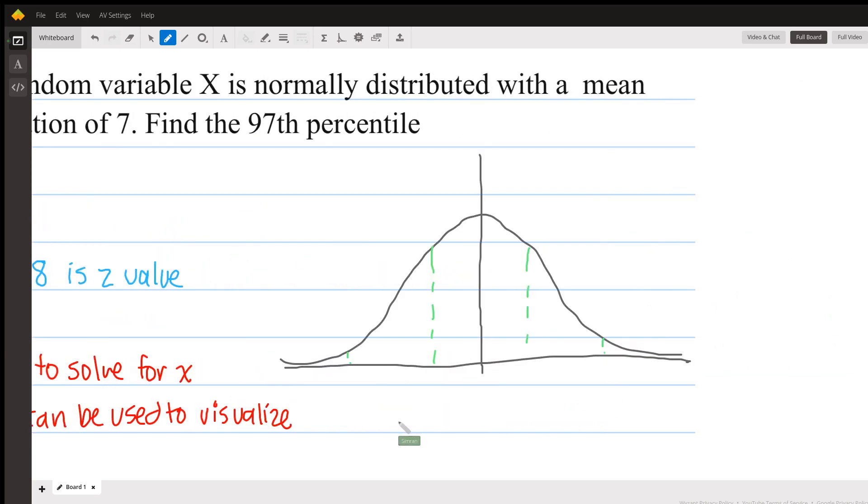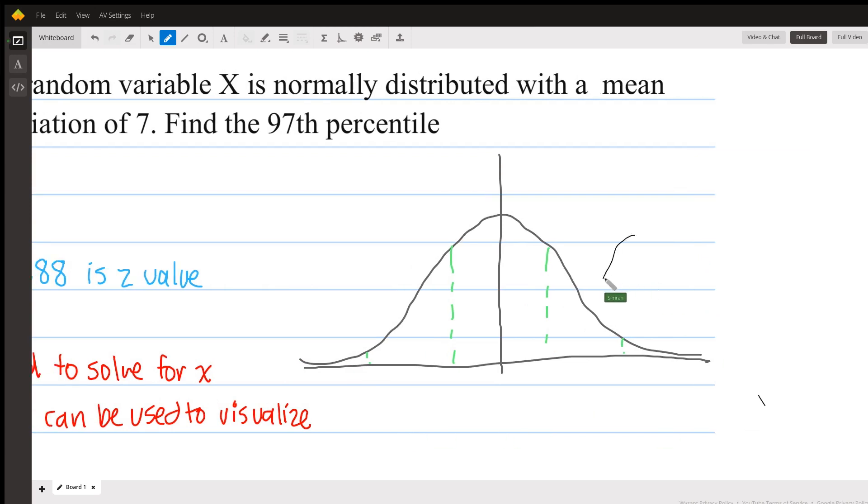So we are told that X is normally distributed, which means that we can use a graph like this of the normal distribution curve.